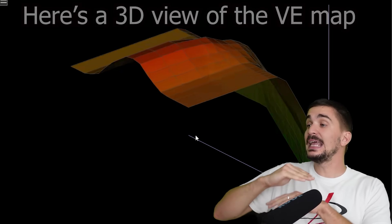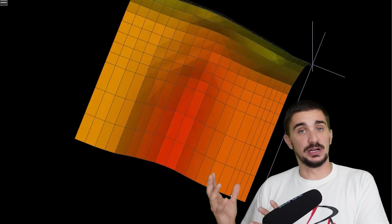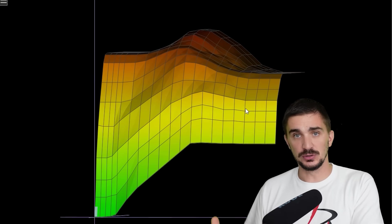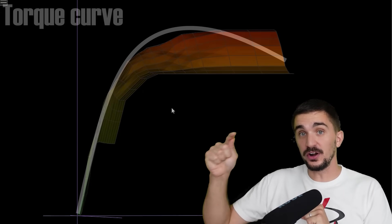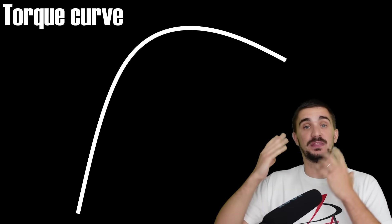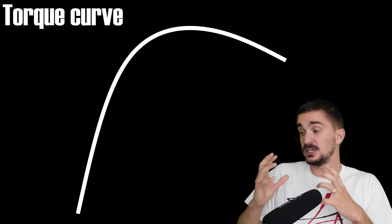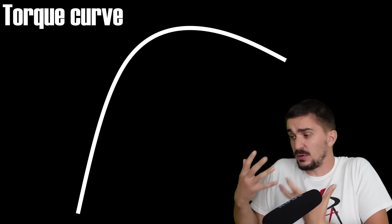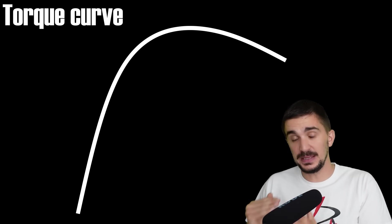The engine doesn't breathe equally well in all operating conditions and different scenarios. And this is why we have a torque curve. And this is why we cannot achieve peak torque at 1000 RPM, for example. And that's because the engine isn't very efficient at breathing at such low RPM.